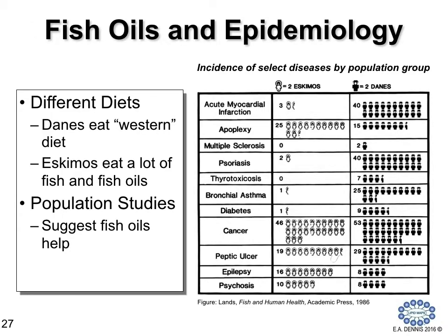The whole interest in fish oils as a dietary supplement has its origins in observations in the early 1980s by epidemiologists who compared rates of certain diseases in Danish people eating a Western diet with Eskimos who eat a lot of fish and fish oils. These population studies suggested that acute myocardial infarction, as well as psoriasis, inflammatory disease, and bronchial asthma, were much more pronounced in Danes than in Eskimos, attributing these dramatic differences to the diet high in fish.